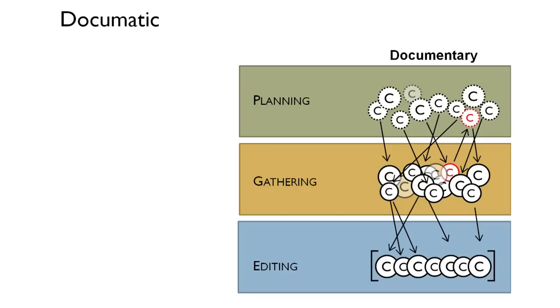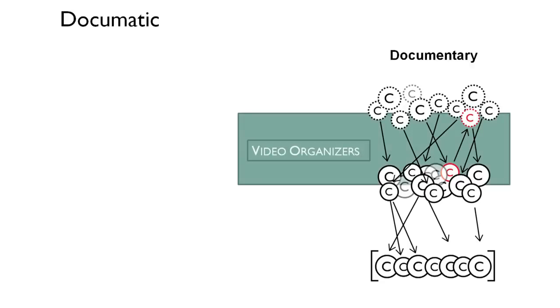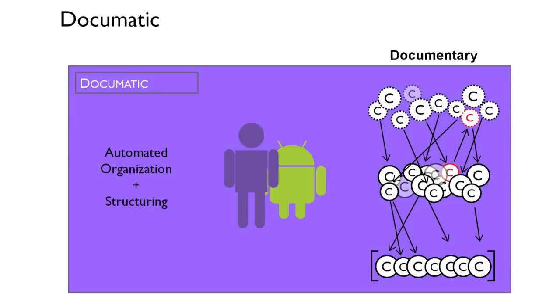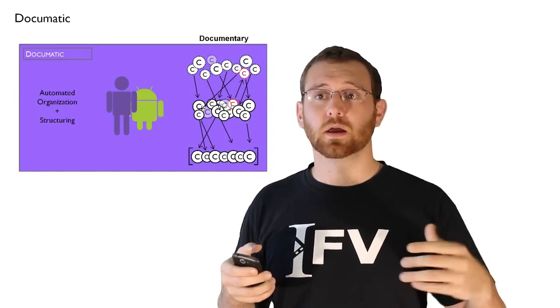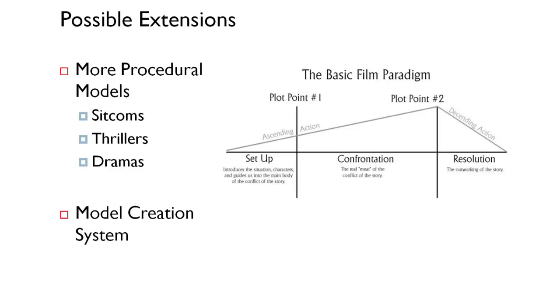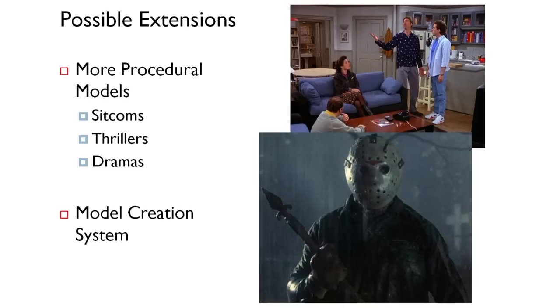The most important feature of this idea of semi-automatic filmmaking is that we would finally have a fully digital production process for video. A documentary is just one possibility. By modeling other cinematic genres, one could begin producing digital, semi-automated sitcoms, thrillers, or even music videos.